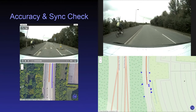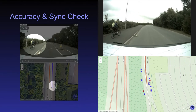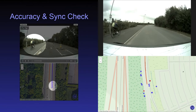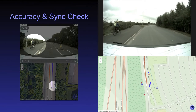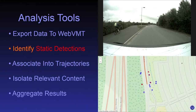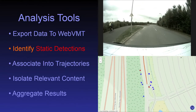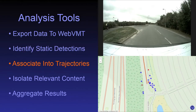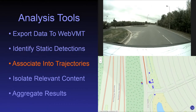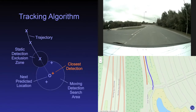HTML integration enabled these data to be pre-visualised in a web browser to verify accuracy and help guide analysis. Stationary detections were identified by the detection tool, and the remaining detections were associated into trajectories by the tracking tool.